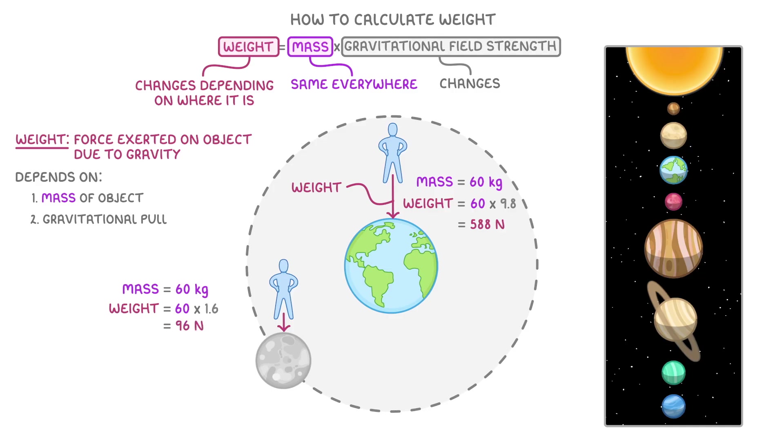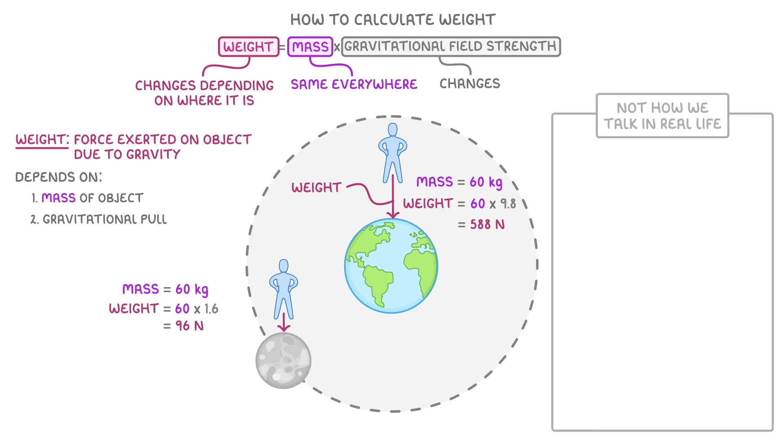Now, you've probably noticed that this isn't how we talk about mass and weight in real life. Normally, we'd say that we weigh 60 kg, not that we have a mass of 60 kg. This is just one of those times where the technical physics terms are different to everyday language.